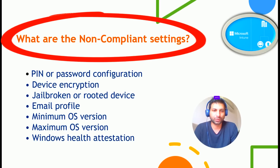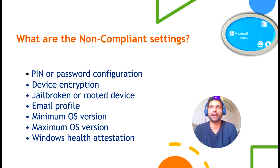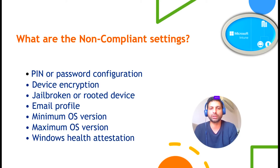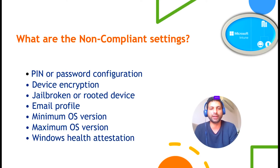What are the non-compliant settings? The first one is PIN or password configuration, which means the device must meet certain password criteria — it should be alphanumeric, it should be a complex password, and without a PIN or password it's not allowed and the device can be marked as non-compliant. The second one is device encryption — you can enable BitLocker or any other encryption software, including third-party encryption. If encryption is not enabled, the device can be marked as non-compliant.